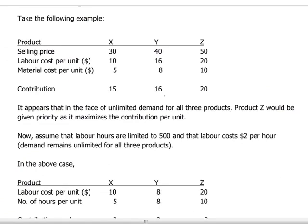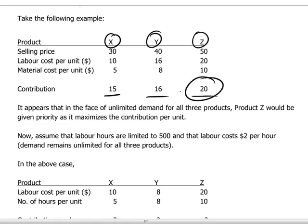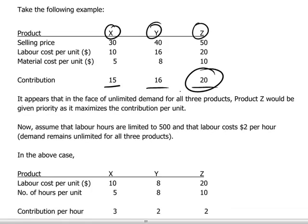Let's take a case here. Let's say we have three products — X, Y, and Z — with costs as shown and contributions per unit of product as indicated. It looks like if we had unlimited demand for all three products, we would want to orient our production towards product Z, which maximizes the contribution per unit. At first glance, that seems to be a reasonable assumption.